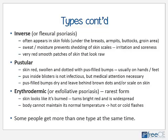Inverse psoriasis looks like very red, smooth patches — almost like the skin is raw. Another type is called pustular psoriasis, characterized by red skin dotted with pus-filled bumps, usually occurring in the hands and feet but can occur anywhere on the body. The pus inside these blisters is not infectious, but in extreme cases medical attention is necessary.